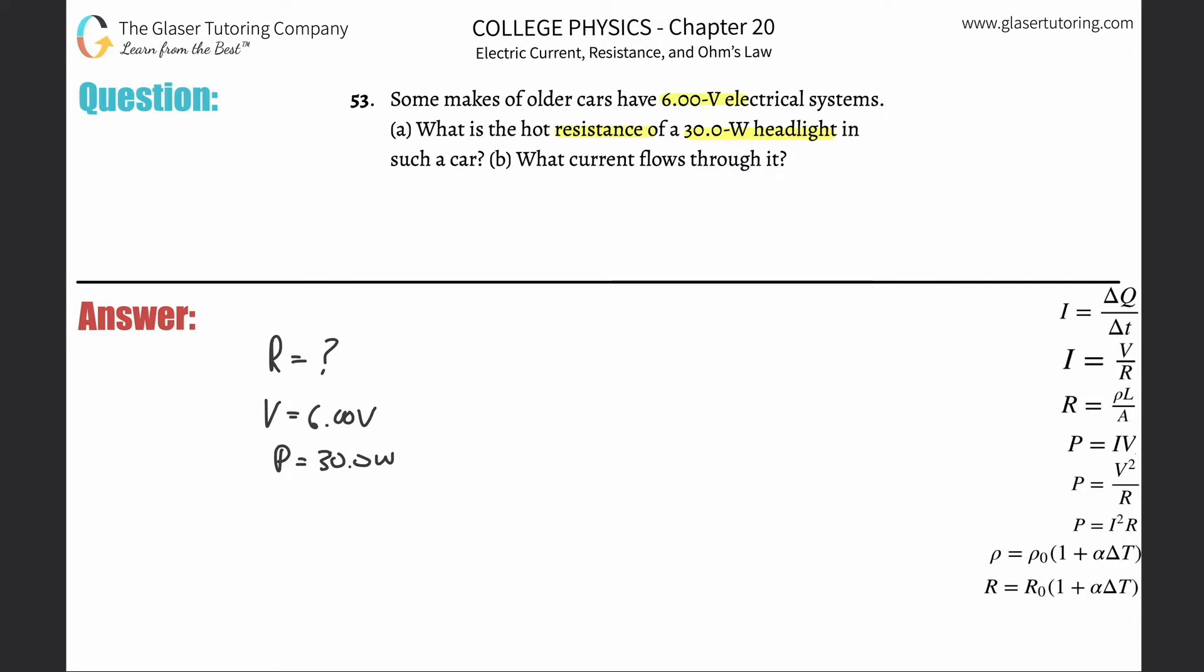Now we have a formula that relates these variables together. And what are they? Well, it turns out that power is going to be equal to I² times R. In other words, this represents the current. Now they didn't give us the current, however we can substitute on in.